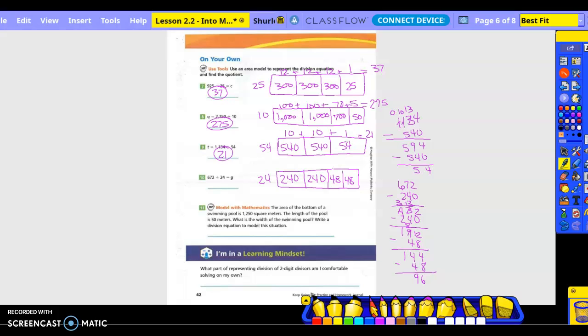How many times do you guys think 24 goes into 96? Let's try that. So 240 would be what? 10. 48 twice, twice, twice. And then 96 would be what? 4. So 10 plus 10 is 20, plus 2 is 22, plus 2 is 24, plus 4 is 28.